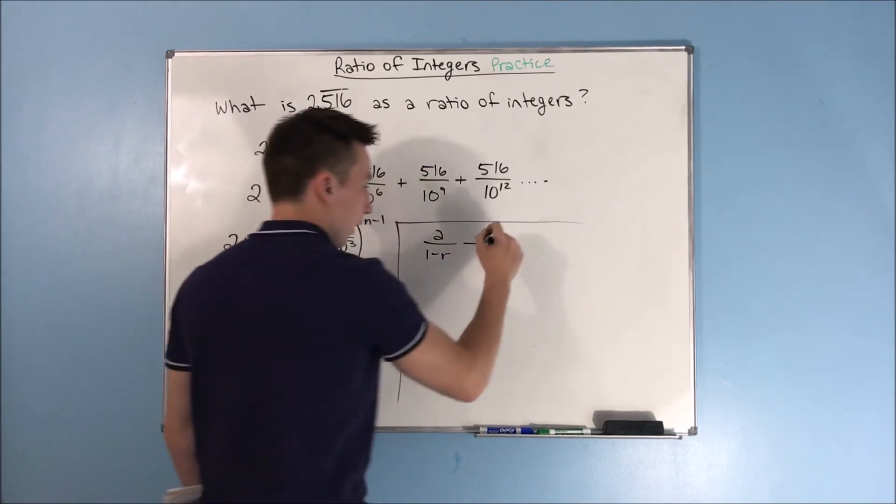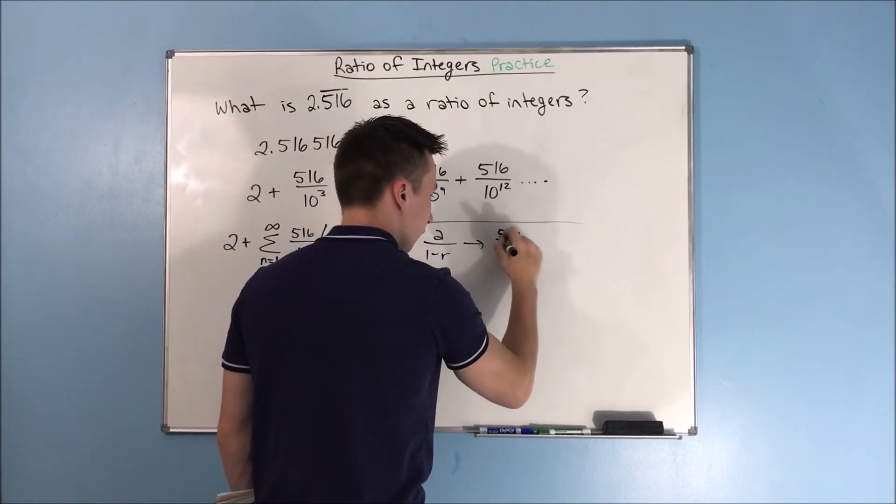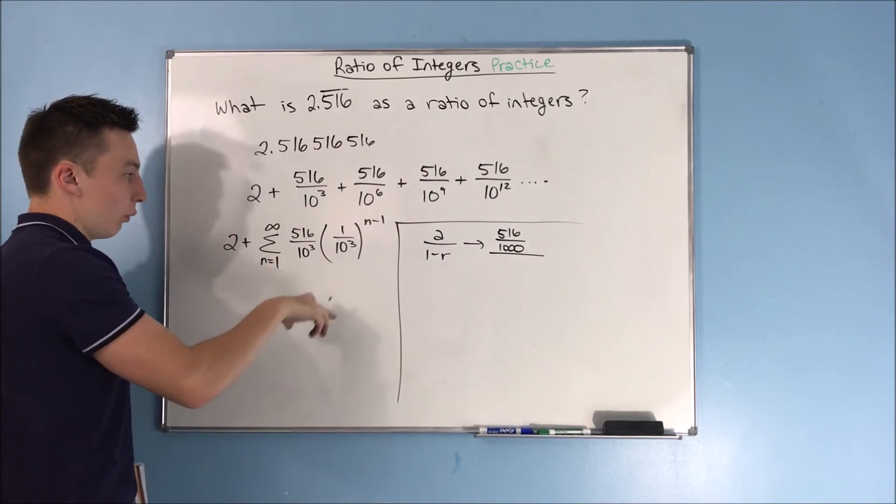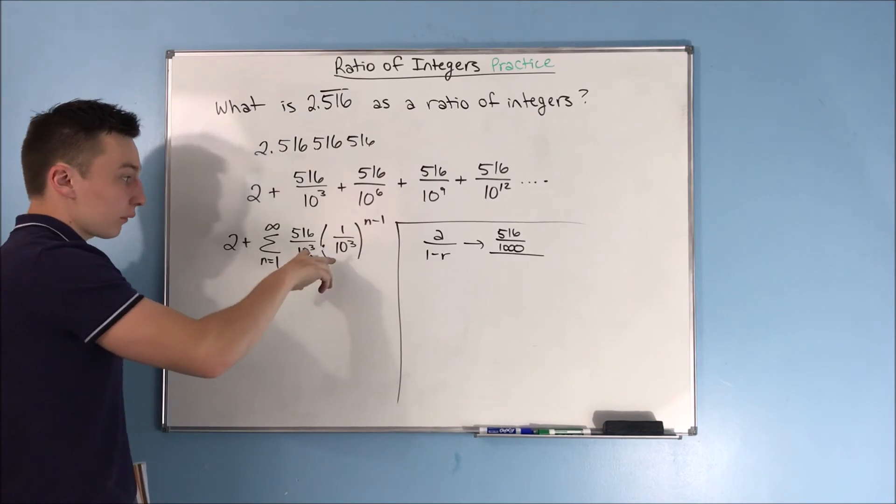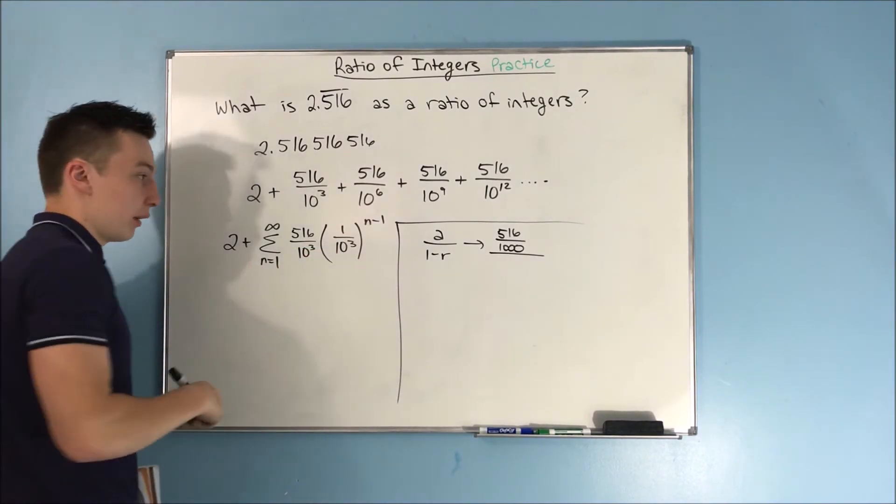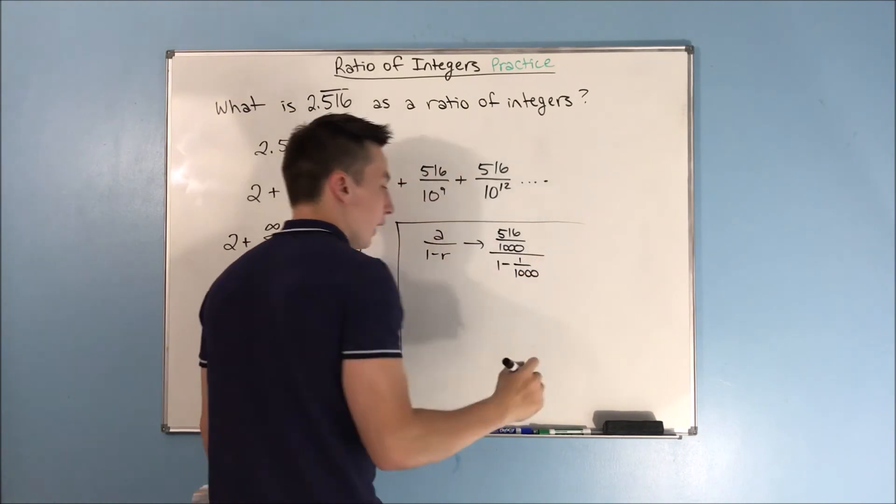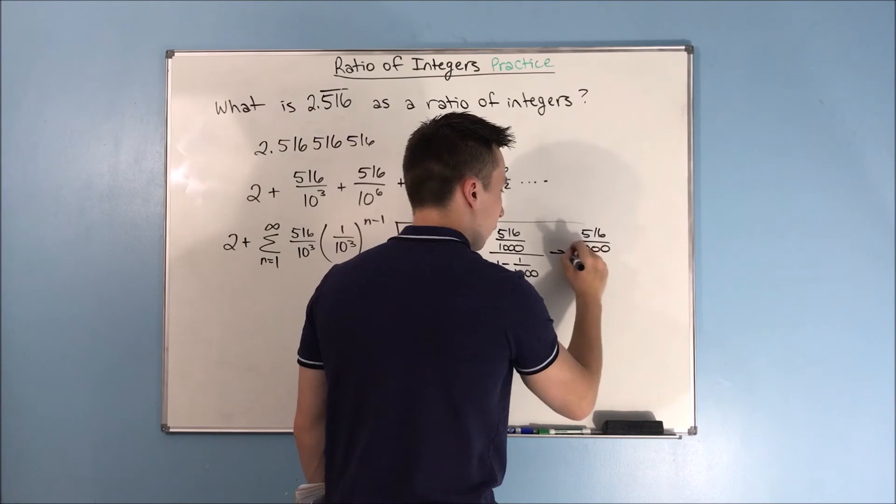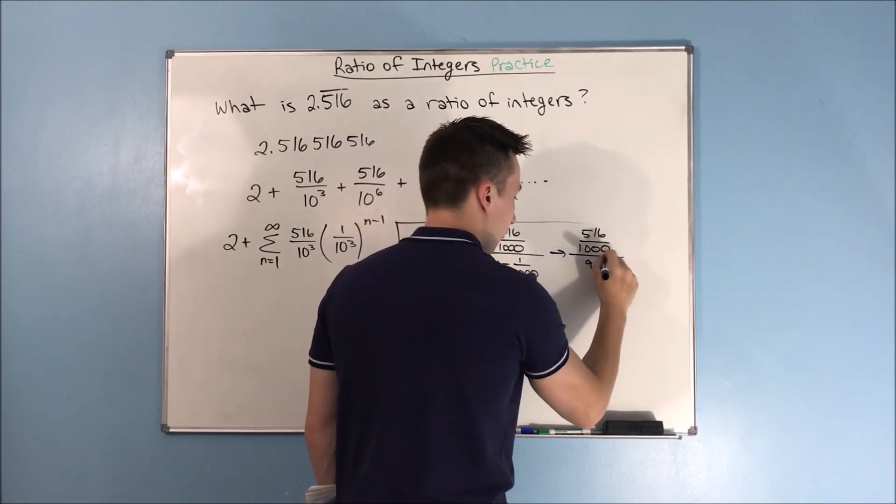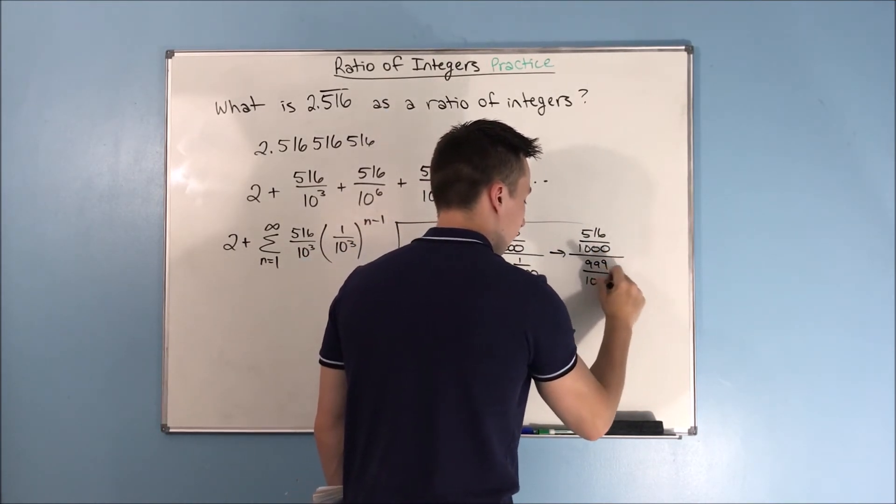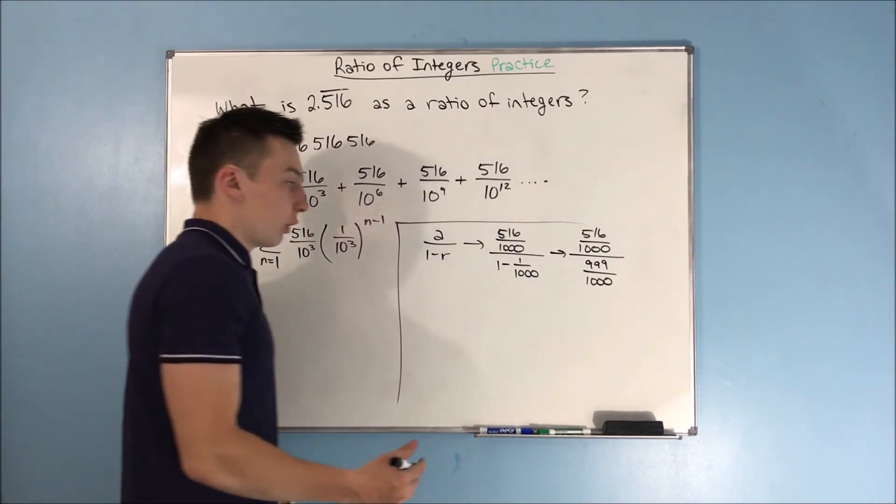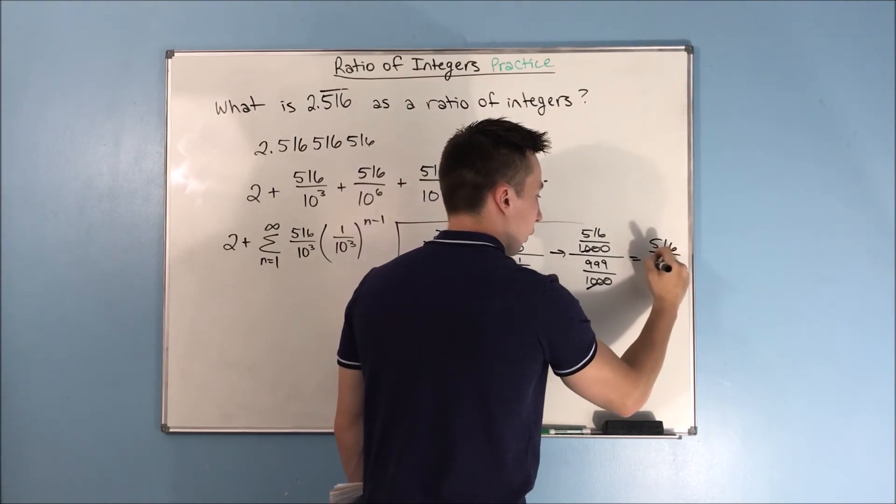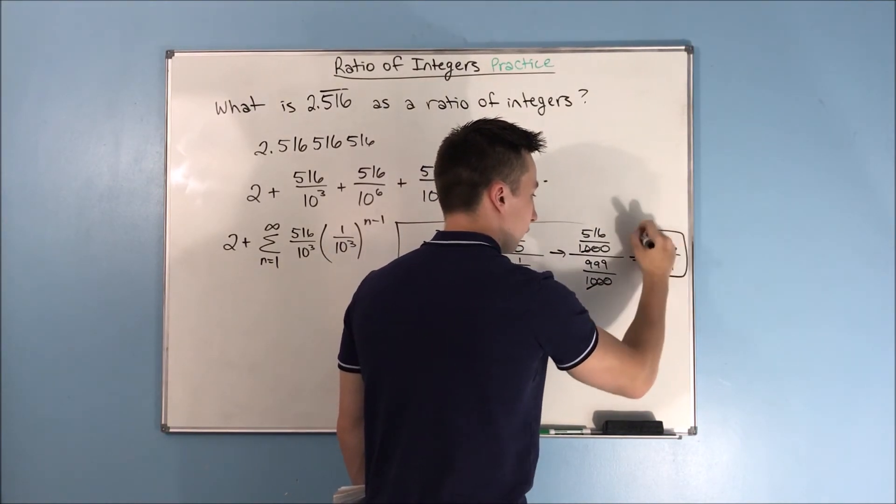What's our a? That's 516 over 1,000. And what is our 1 minus r? It's going to be 1 minus 1 over 10 cubed. And we can rewrite that, simplify it down a little bit, as 516 over 1,000 over 999 over 1,000. These thousands are going to go away. We're going to be left with 516 over 999.